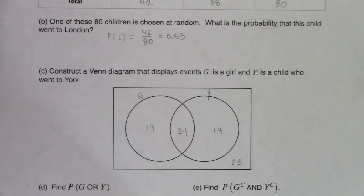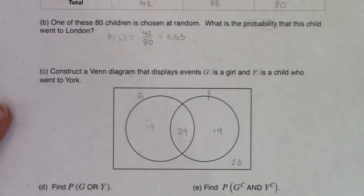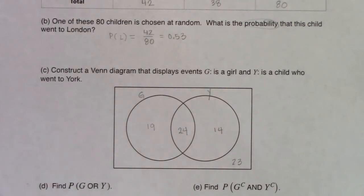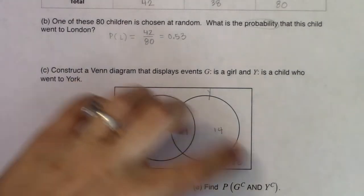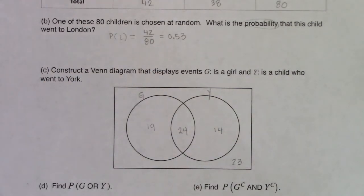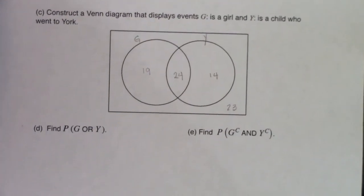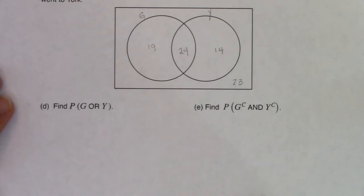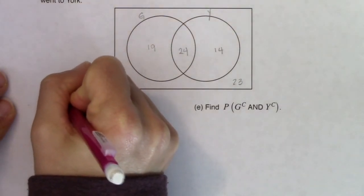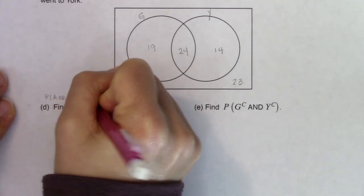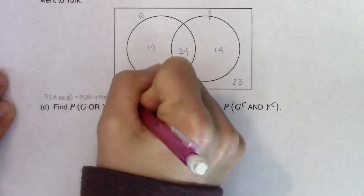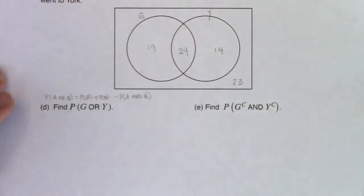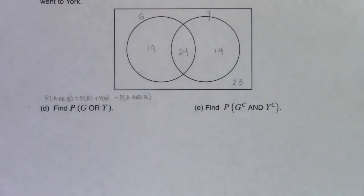With every table-to-Venn mapping, the four main numbers — excluding the totals — map onto the four areas of the Venn diagram. Now I have my Venn diagram even though this started as a table problem. For parts D and E, I can use either the Venn or the table. Since it is a table problem, I'll stay with the table method. Part D is asking: what's the probability of G or Y? I'll use the addition formula: P(A or B) = P(A) + P(B) − P(A and B).